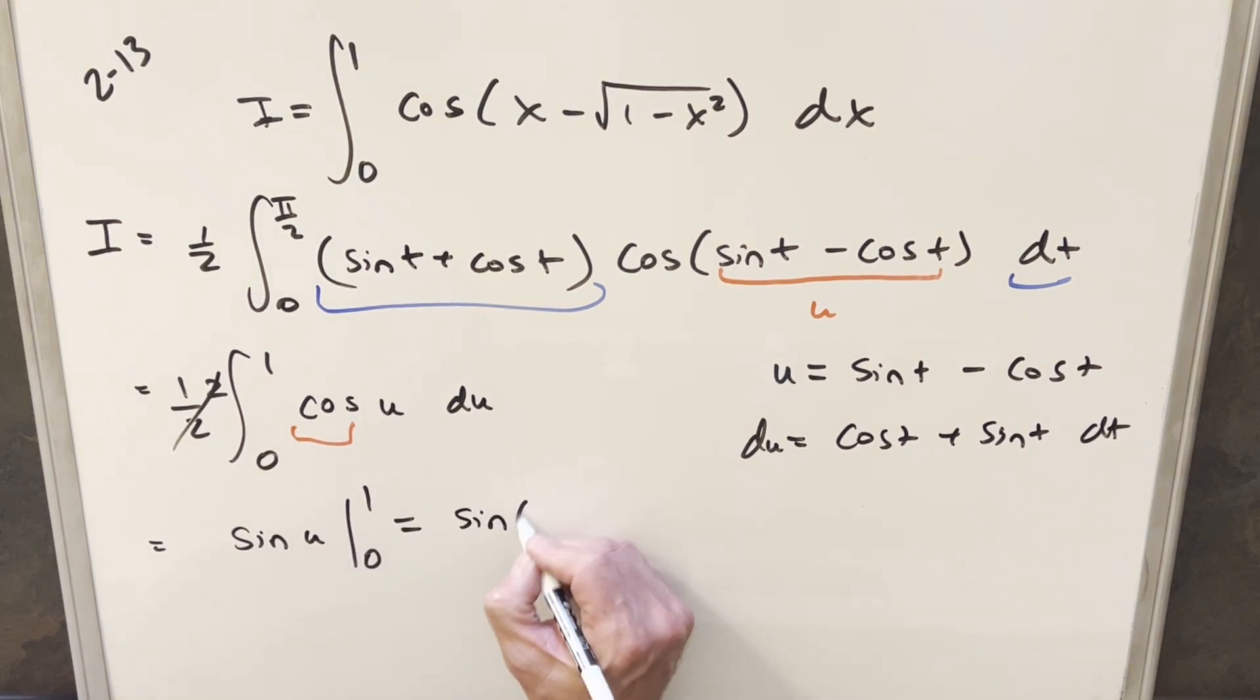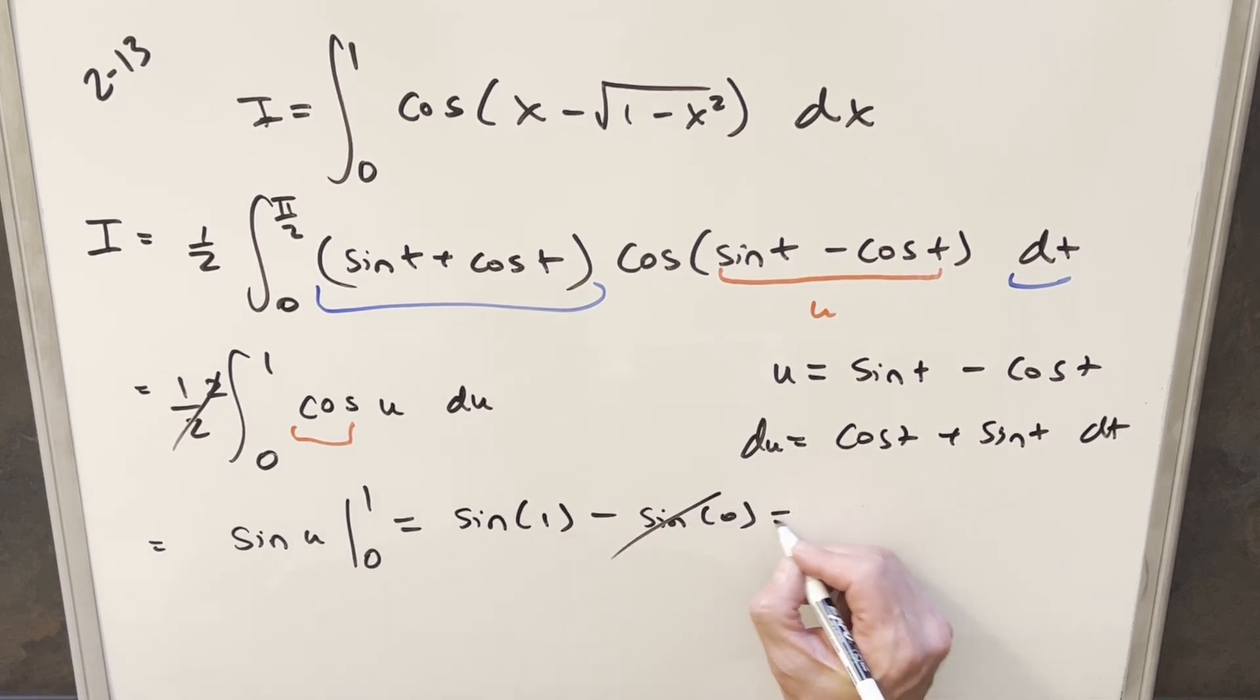Evaluating at 1, we get just sine of 1 minus, evaluating at 0, this is just sine of 0. But sine of 0 is 0. So for my final solution to this, we just get sine of 1.